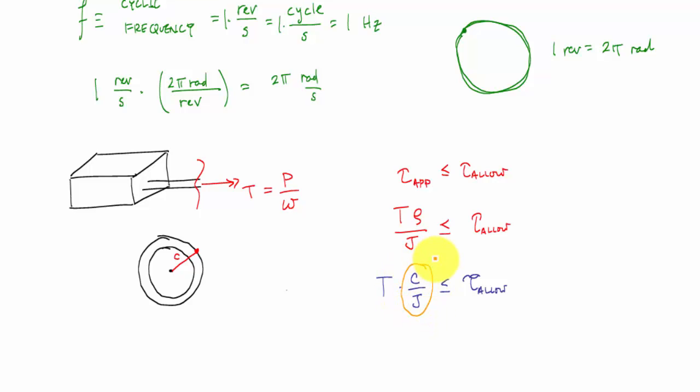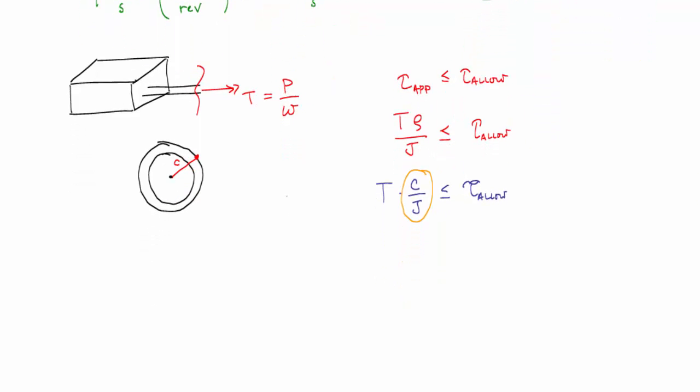We would like this J over c to be greater than or equal to T, the torque, over tau allow. What we've done here is lump all the properties associated with the cross section geometry into one variable.